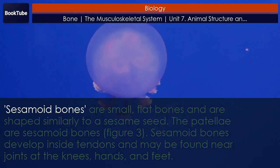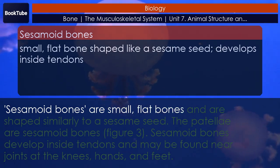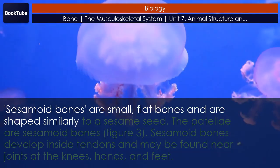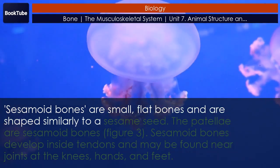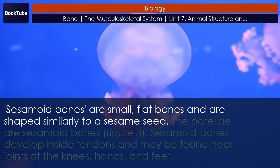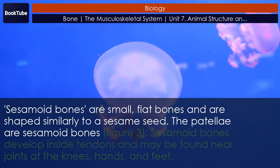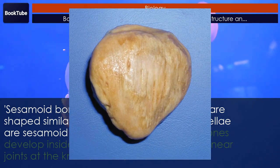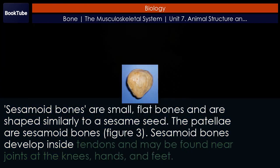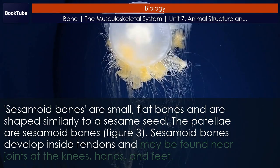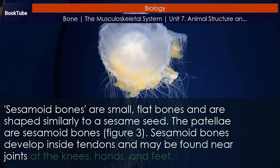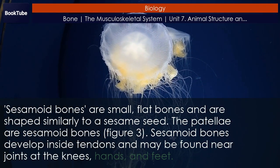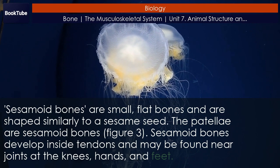Sesamoid bones are small, flat bones shaped similarly to a sesame seed. The patellae are sesamoid bones. Sesamoid bones develop inside tendons and may be found near joints at the knees, hands, and feet.